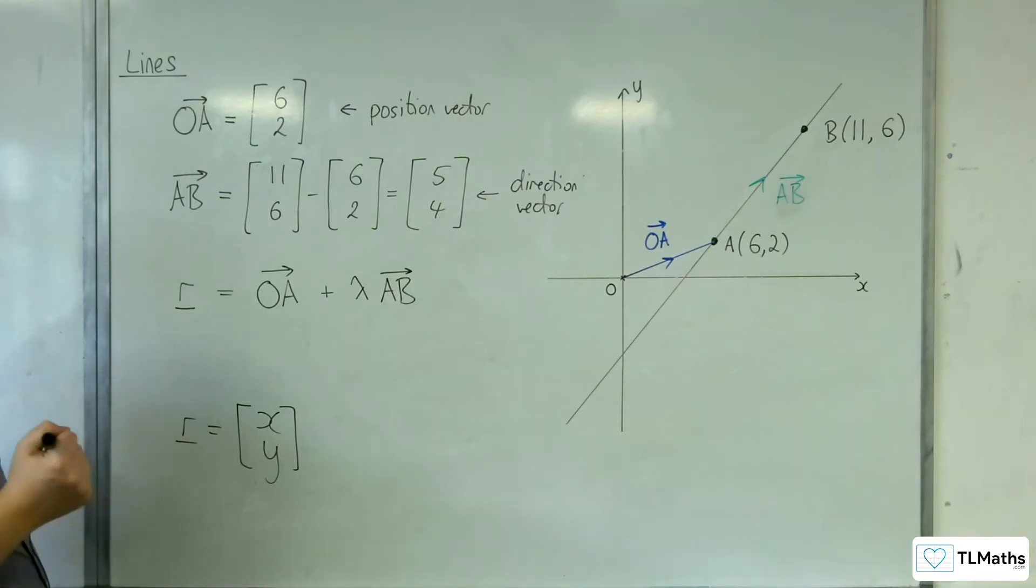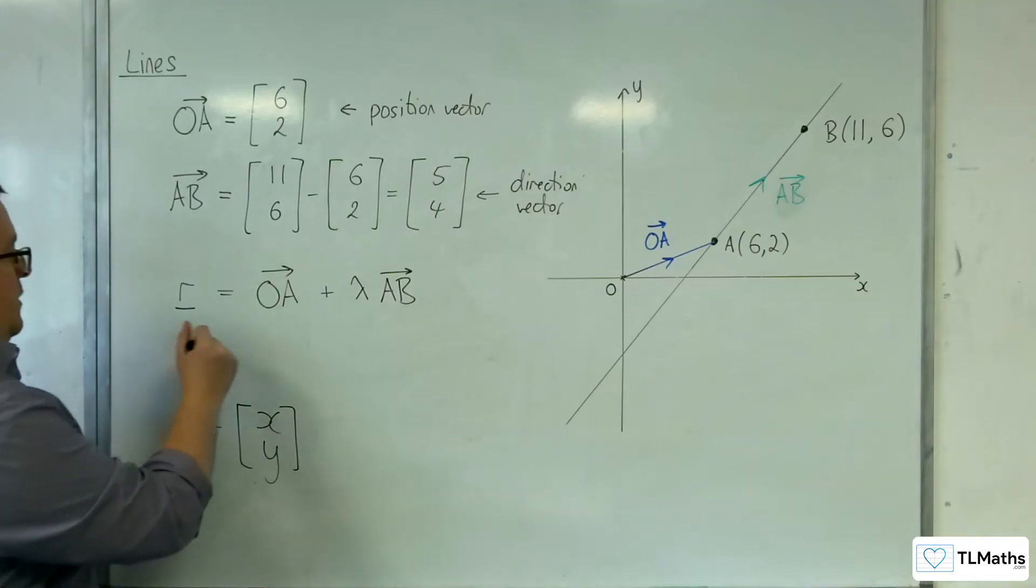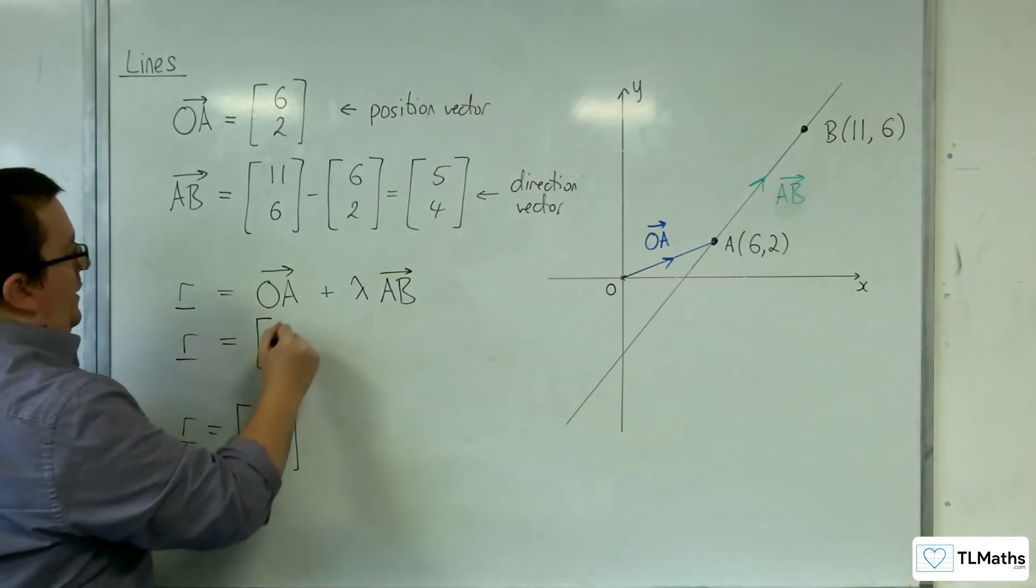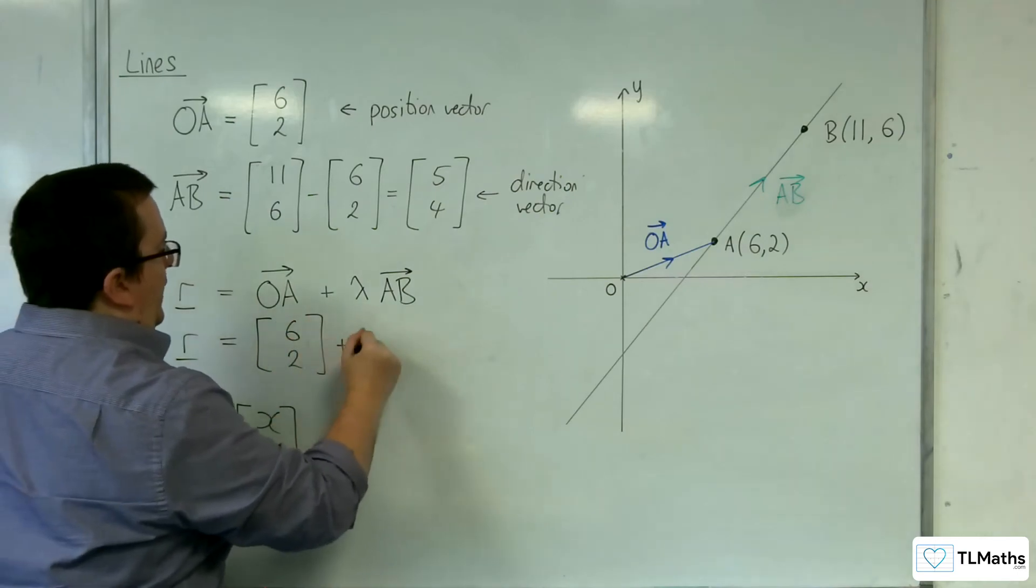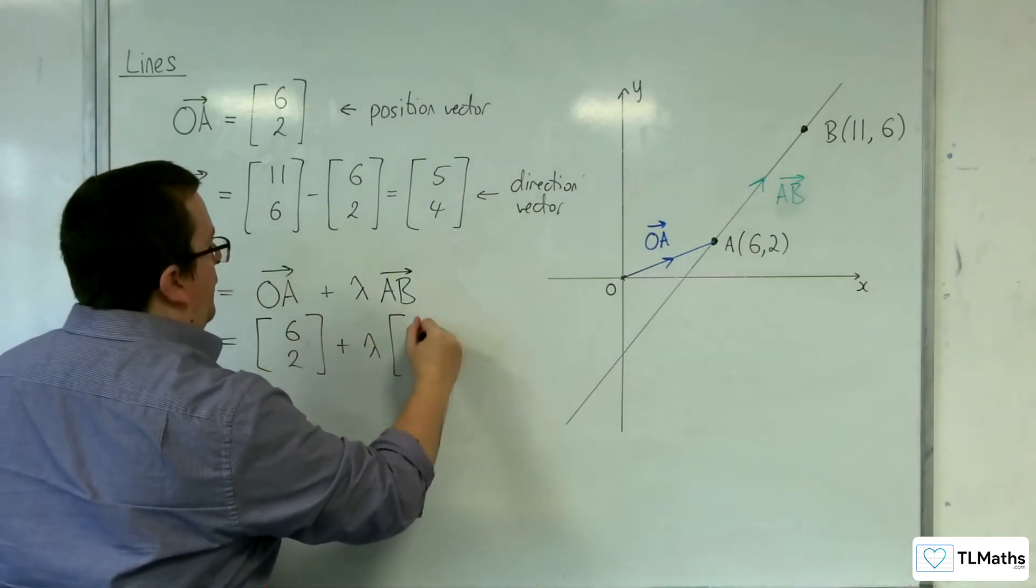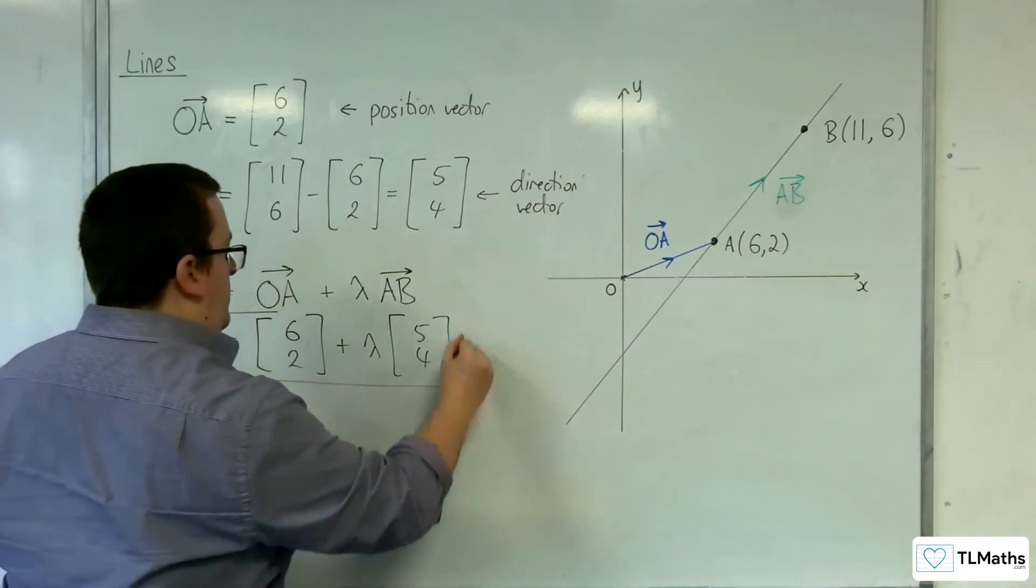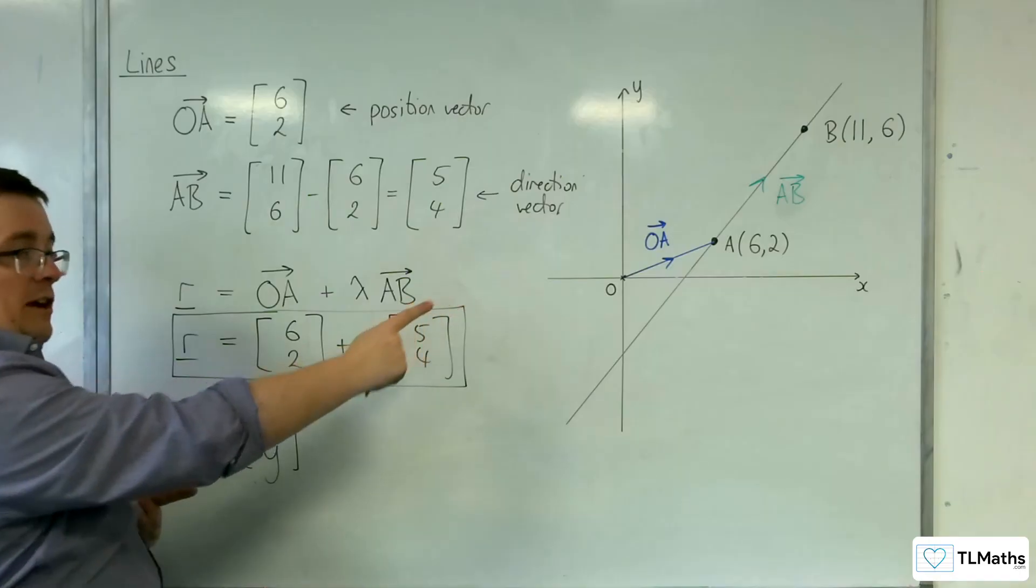So the general form, using our writings there, I could write that down as R equals (6, 2) plus lambda times (5, 4). That is the vector equation of this line.